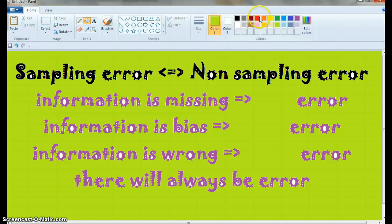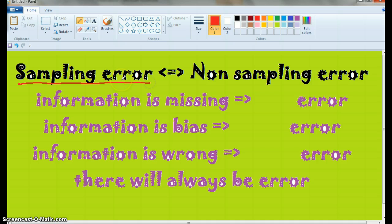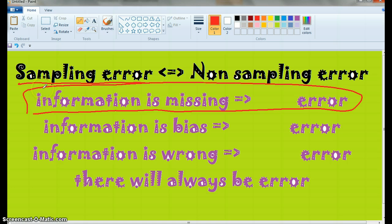What is the difference between sampling error and non-sampling error? With sampling error, you have an error because you have a sample. Simply because you don't have all the information, information is missing, you're guessing. So that's a sampling error.